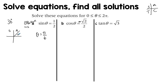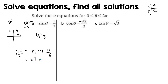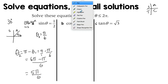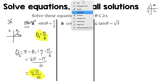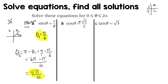So the first quadrant gives π/6. I need to find the other angle, which belongs in the second quadrant. We know the second quadrant angle will be π minus θ₁, so it's π − π/6. Getting a common denominator gives 5π/6. So your two solutions are θ = π/6 and θ = 5π/6, and you can check that evaluating sine at those two values gives positive 1/2.